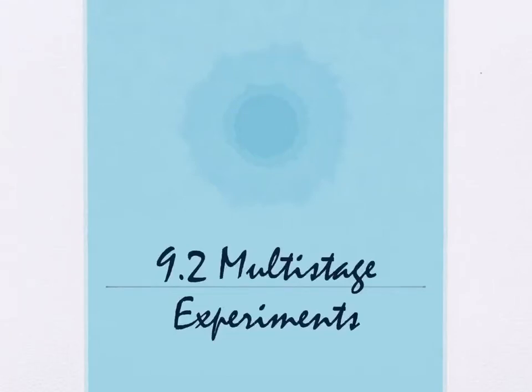All right, today we are going to take a look at section 9.2, which is titled multi-stage experiments. So last time in section 9.1 we talked about some simple experiments like drawing a single card out of a deck of cards. What's the likelihood of it being hearts? Or rolling a specific number or type of number like evens on a six-sided die.